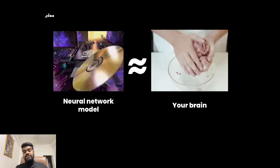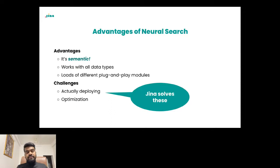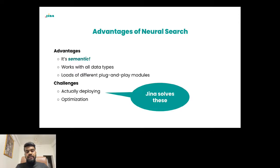What are the advantages of neural search? It's semantic — similar to how a human works. It understands the context and searches for relevant data, not relying on specific keywords like conventional search. It can work with all types of data, not just text. It also comes with plug-and-play modules — Jina Hub lets you plug in predefined executors and quickly build neural search for any kind of data. The challenges come at deployment time, because large deep learning models require optimization for runtime and latency. Jina is the answer to all of these challenges.